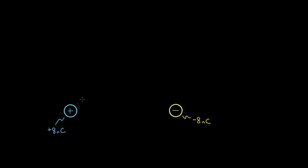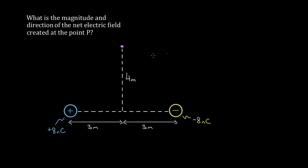Let's try a hard one — this one's a classic. Let's say you had two charges, positive eight nanocoulombs and negative eight nanocoulombs, and instead of asking what's the electric field somewhere in between, which is essentially a one-dimensional problem, we're gonna ask what's the electric field up here at this point P.